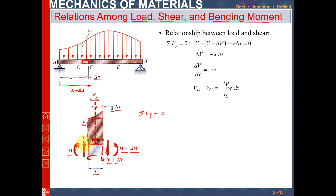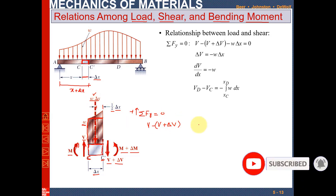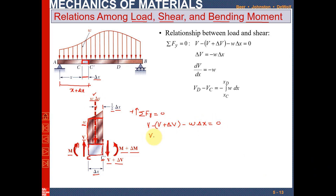There are two shear forces: V acting upward, and minus (V plus delta V) acting downward. There is also the load w·delta x acting downward, so minus w·delta x equals zero. This simplifies to: V minus V minus delta V minus w·delta x equals zero. Therefore delta V equals minus w·delta x.